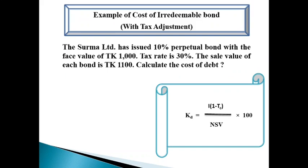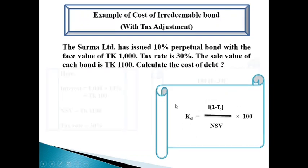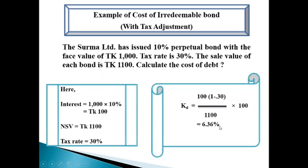Here is an example of cost of irredeemable bond. Surma Limited has issued a 10% perpetual bond with the face value of Taka 1000. Tax rate is 30% and the sale value of each bond is Taka 1100. We have to calculate the cost of debt. Since the bond is a perpetual bond and there is a tax rate, we use the formula I × (1 − TC) ÷ NSB × 100. After putting the values into the formula, we get the answer: 6.36%.